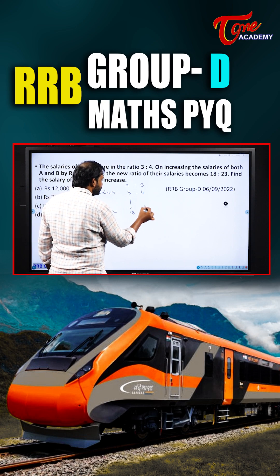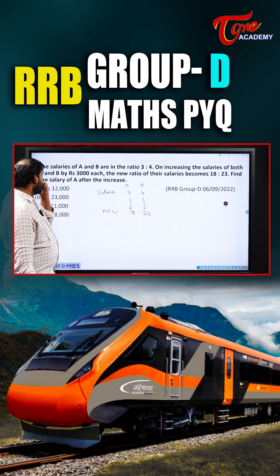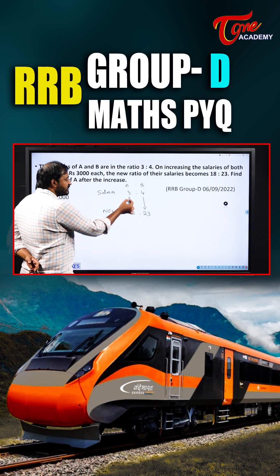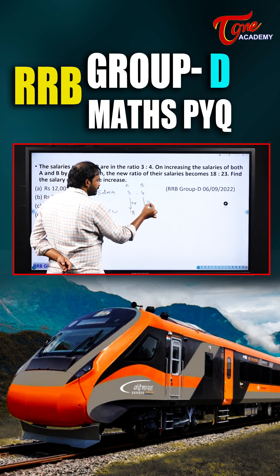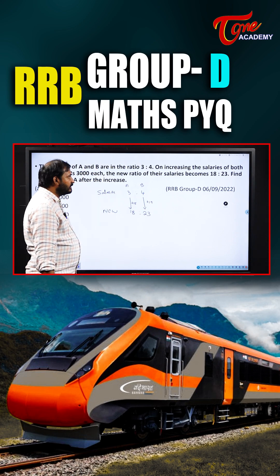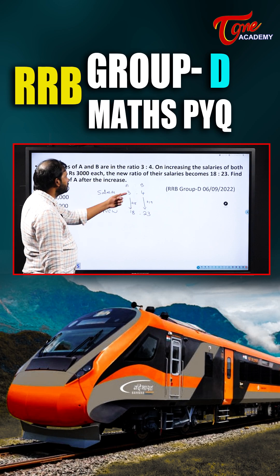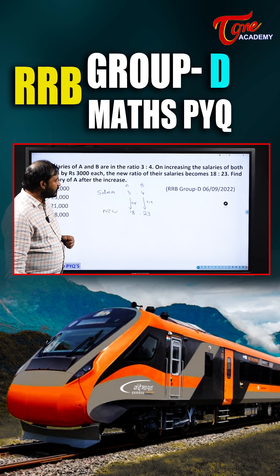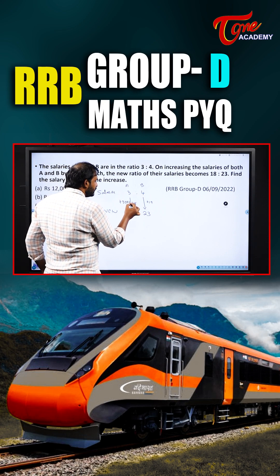You can solve it in two ways. Find the salary of A after the increase — that's what they are asking us. Now, both values are increased by how much? 3000 and 3000. So when you are increasing by a constant, their ratios also should be increased with a constant.